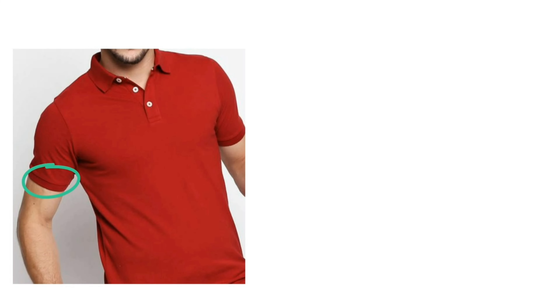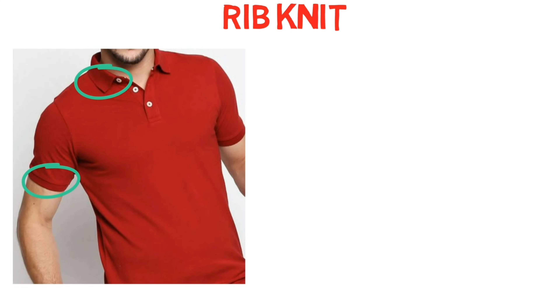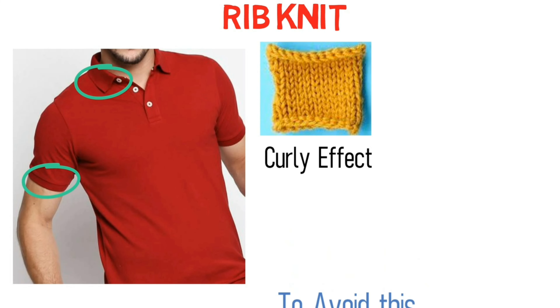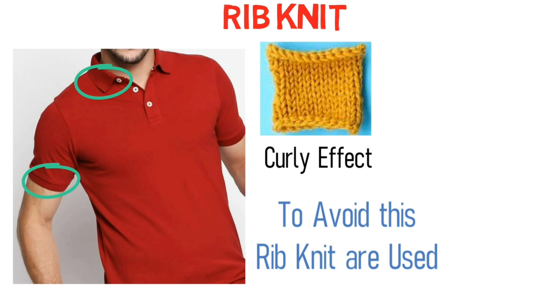If you have seen knitted fabric clothes, there is something different at the ends of sleeves and collar. Our next type of knit is rib knit. Knitting fabric has a curly effect by nature, and to avoid these curls at the end of cloth corners, rib knit is used because it doesn't curl at the edges.